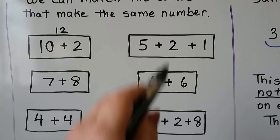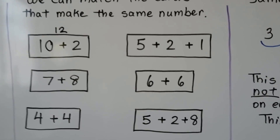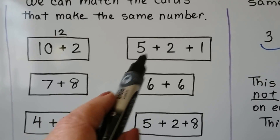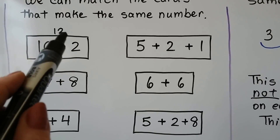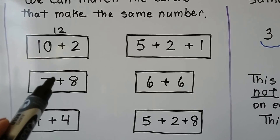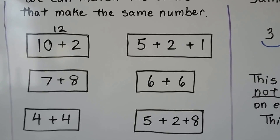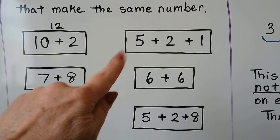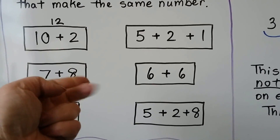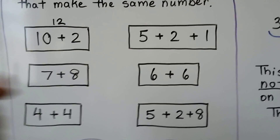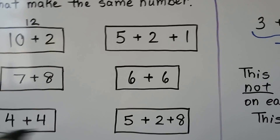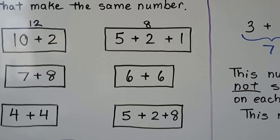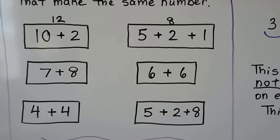Which one on this side is equal to 12? We can add them up and write their sums next to them so we know. This one is 5 plus 2 plus 1. We have 5, 6, 7, 8. So this one's an 8. 5 plus 2 plus 1 is a way to show 8.